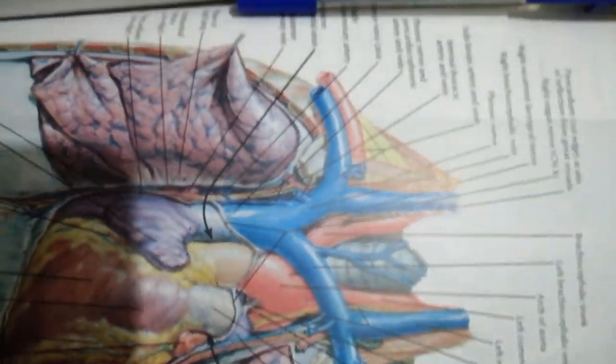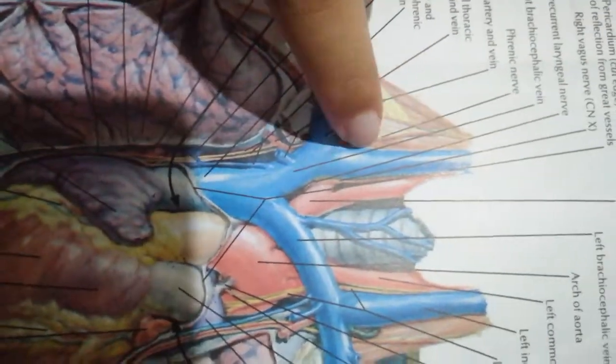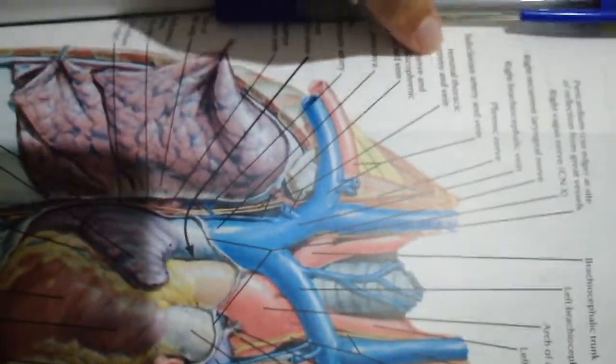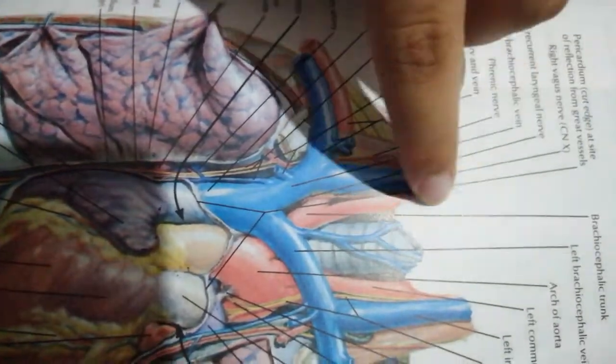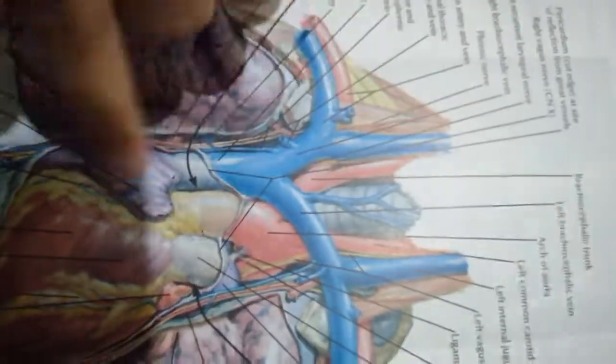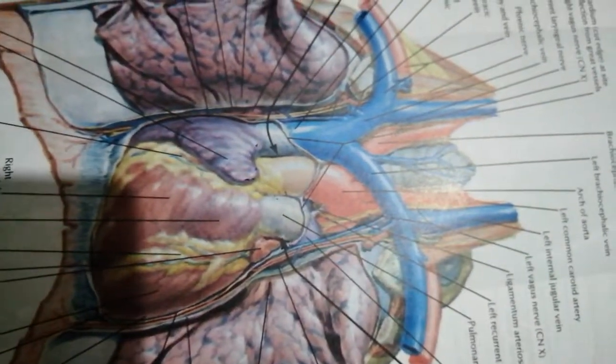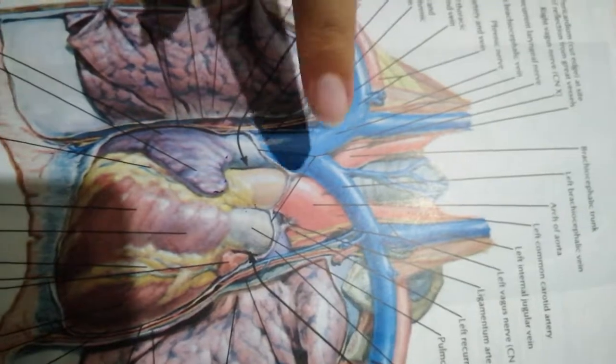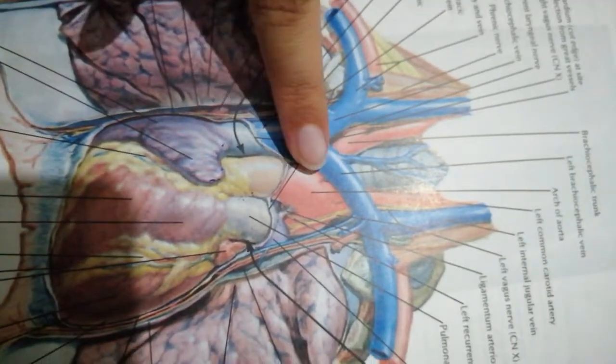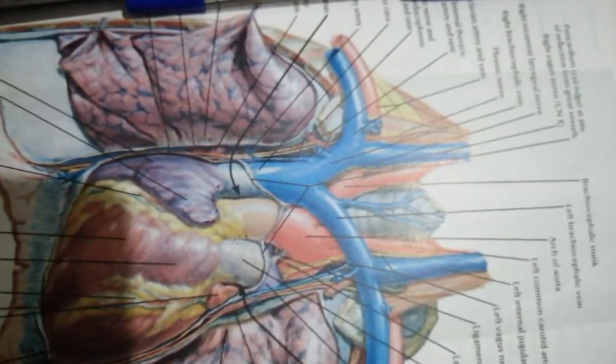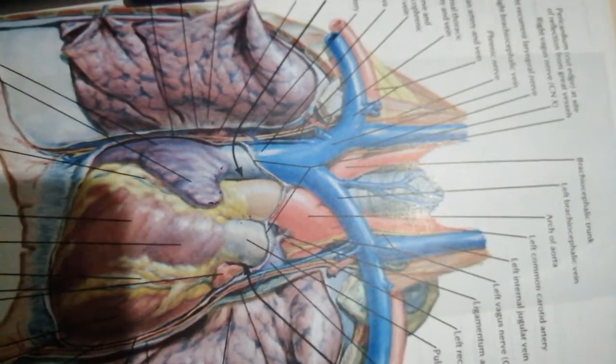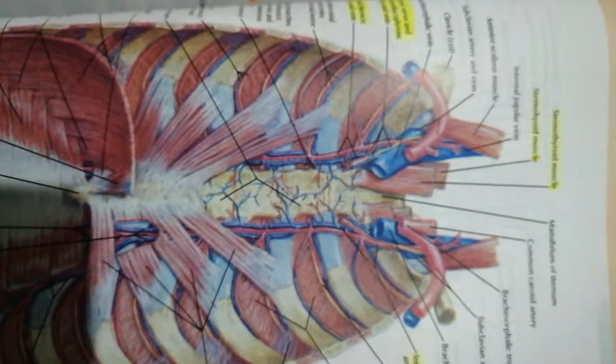As for the nerves, we have the phrenic nerve—the right and left phrenic nerve—and the right and left vagus. They basically also enter through this root. We also have the sympathetic trunks, both right and left, and the first thoracic nerves which basically ascend upwards so they can become a part of the brachial plexus.